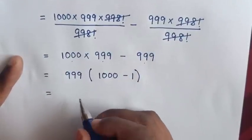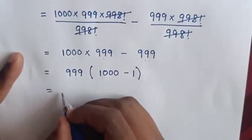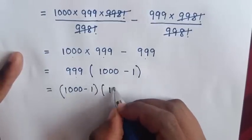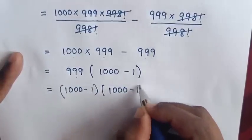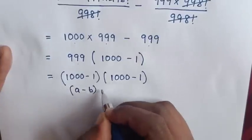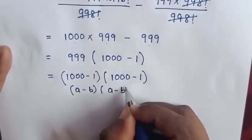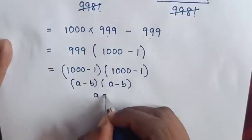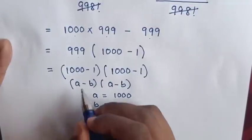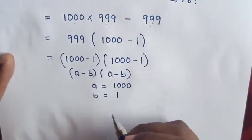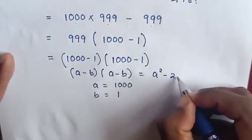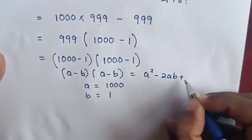Then it will be equal to 999, which is the same as 1000 minus 1, times 1000 minus 1. Then we apply the rule (a minus b) times (a minus b), where a equals 1000 and b equals 1. So this equals a squared minus 2ab plus b squared.